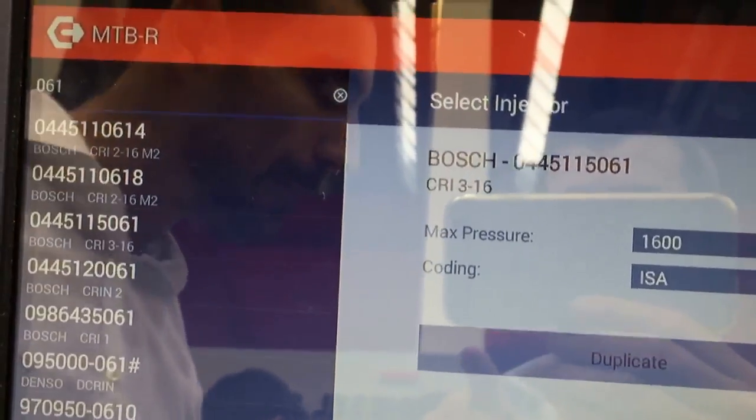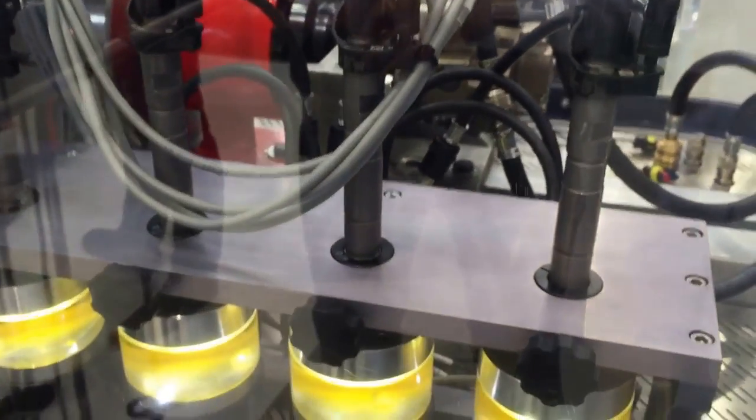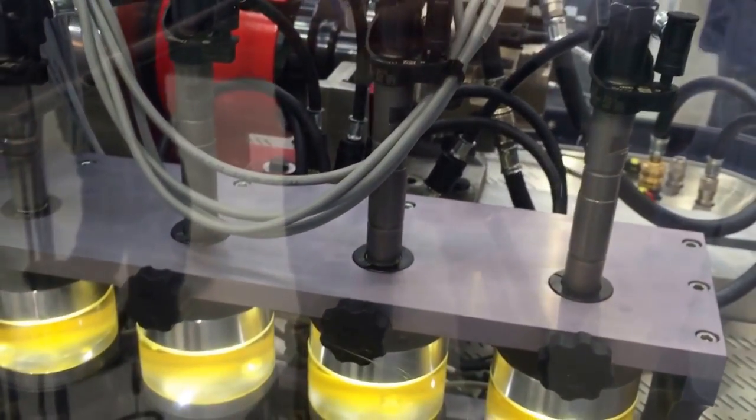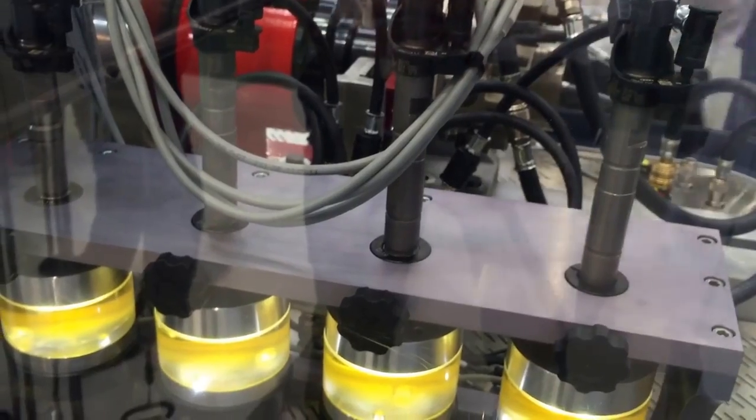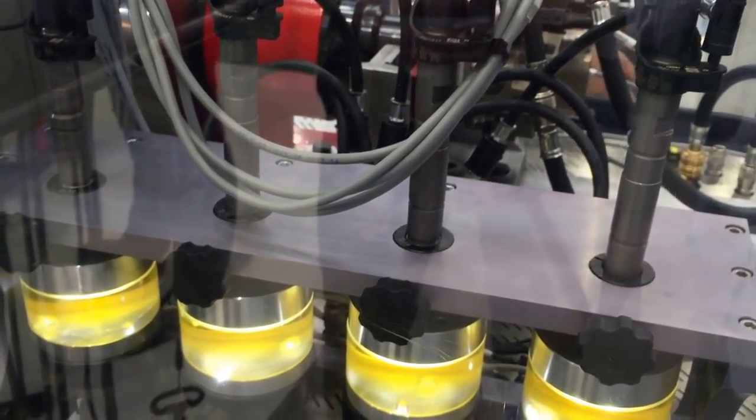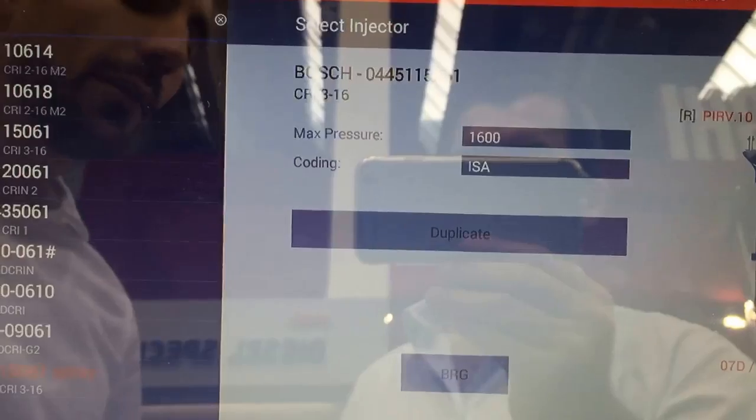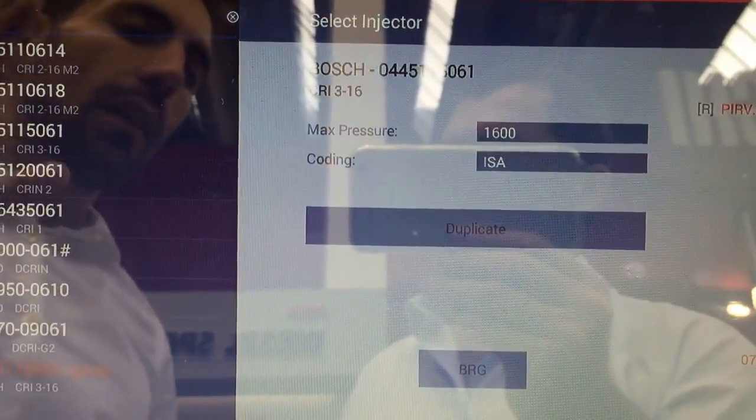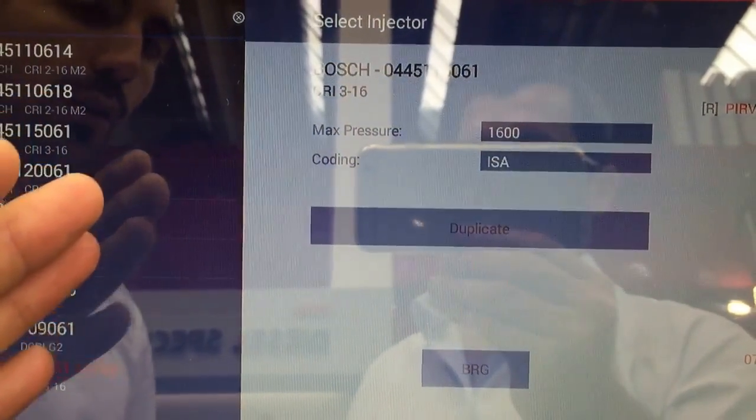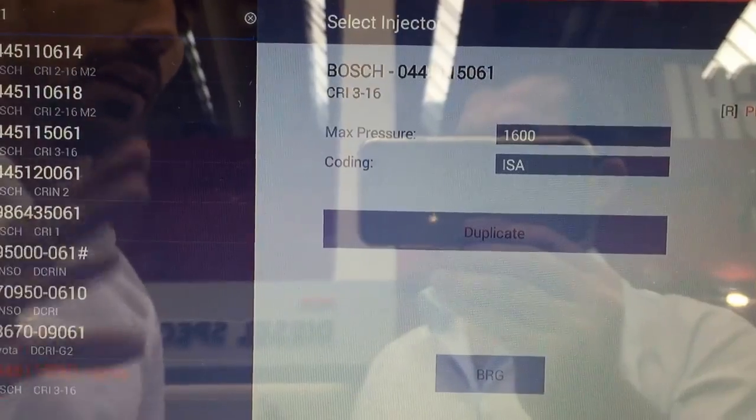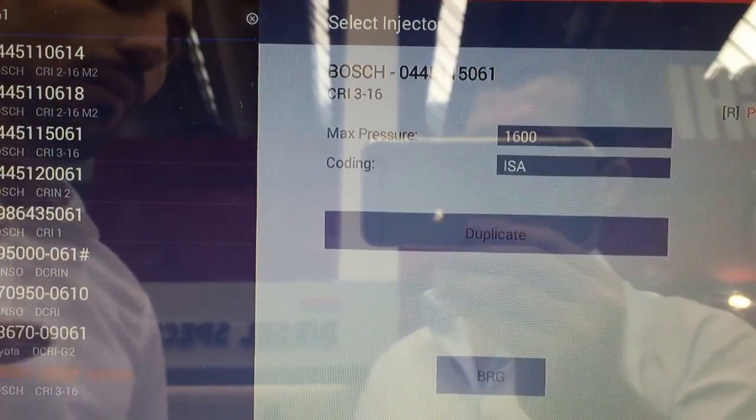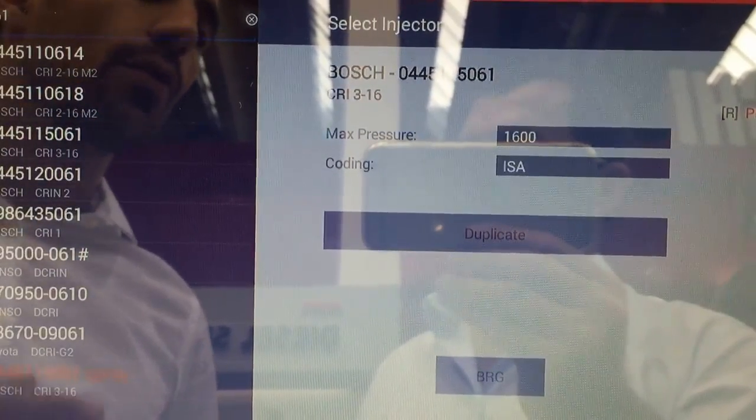In this case you are selecting the injector which is installed in the machine. It's Piezo injectors, Bosch Piezo injectors. We have installed many official Bosch test plans with different pressure, different RPM, different strokes, different microseconds. You can duplicate your test plan by your own.